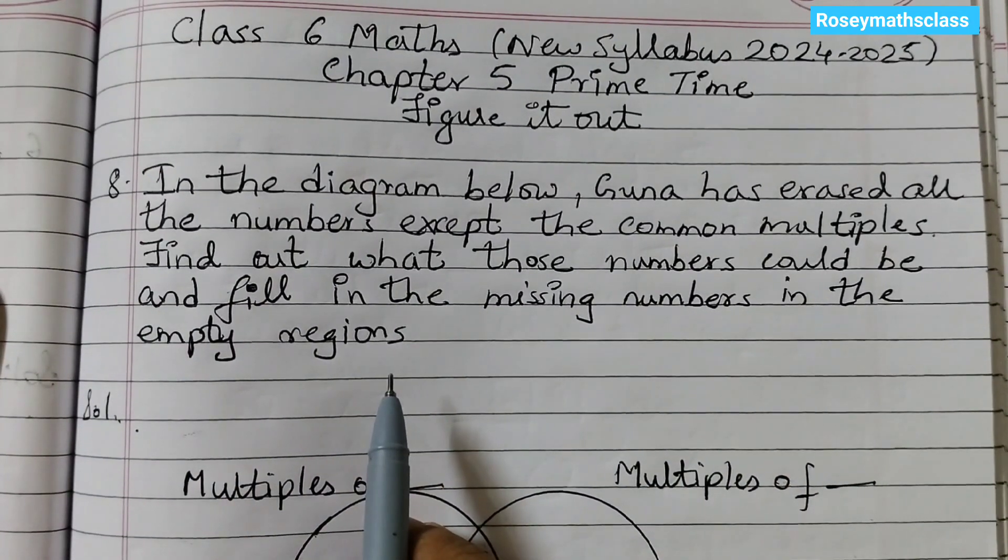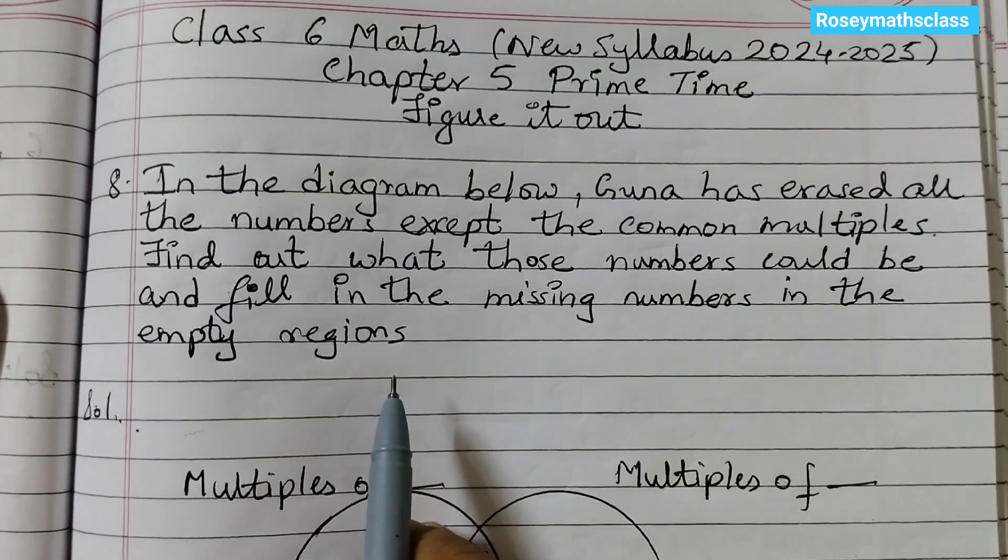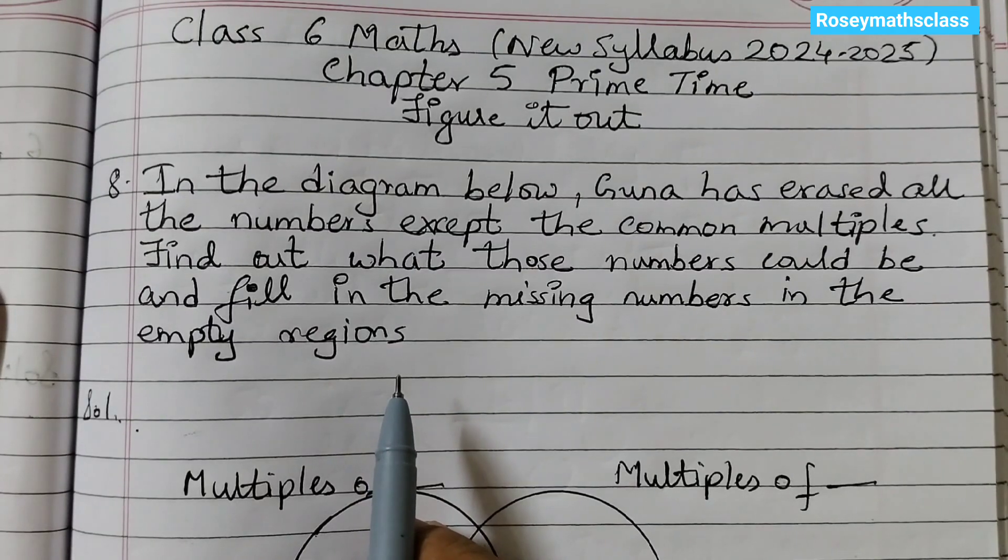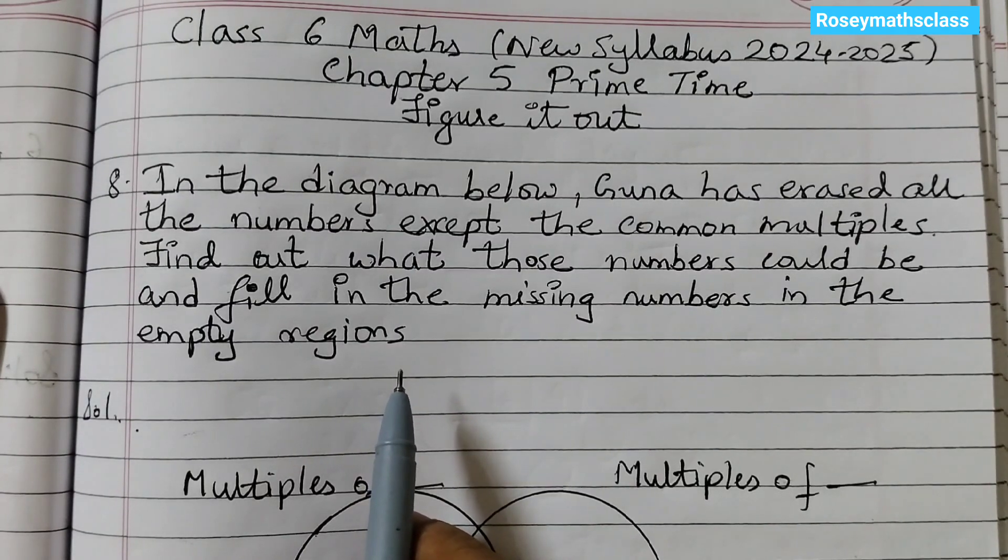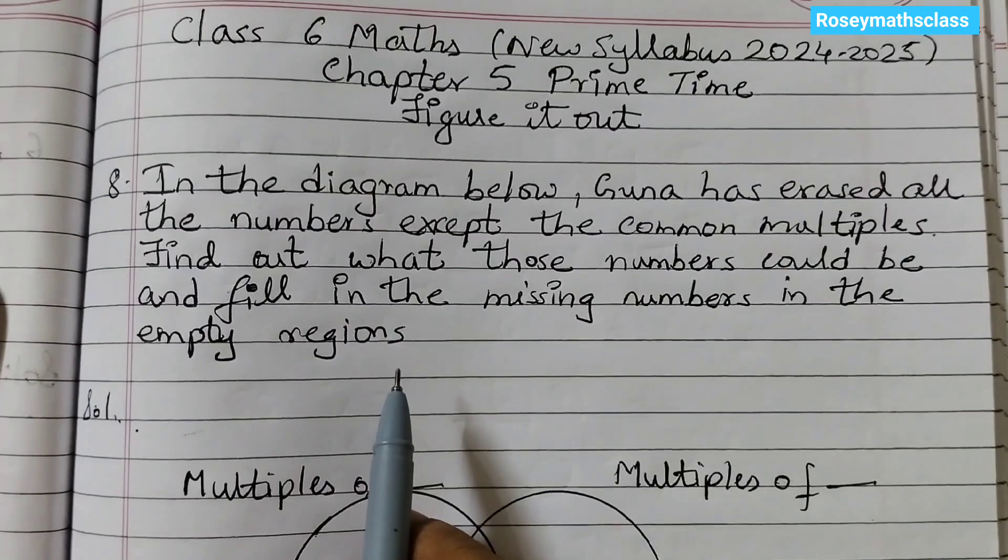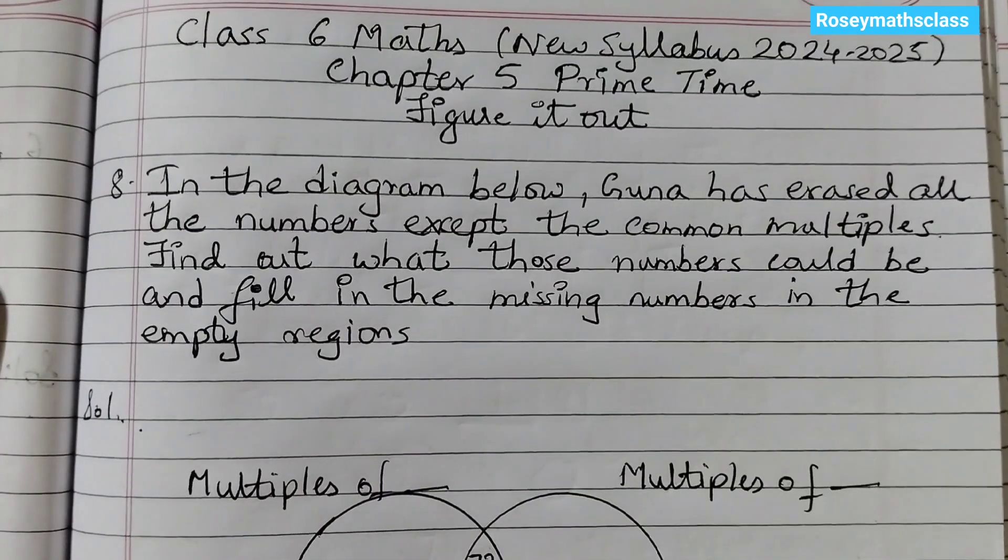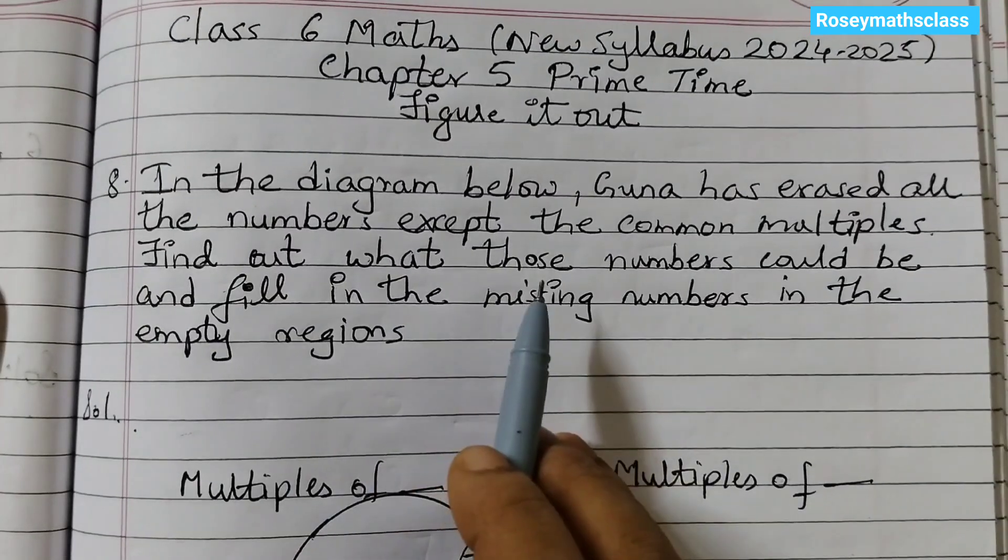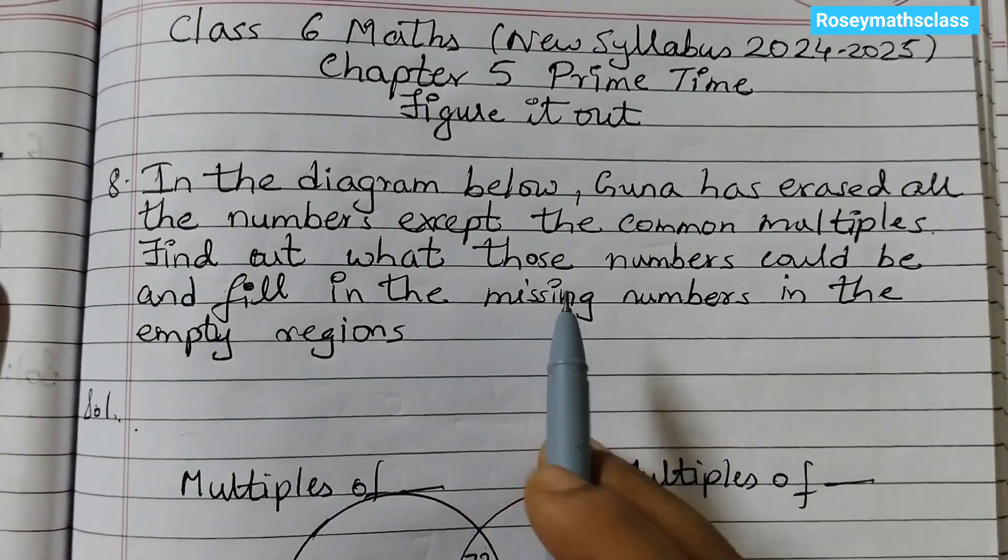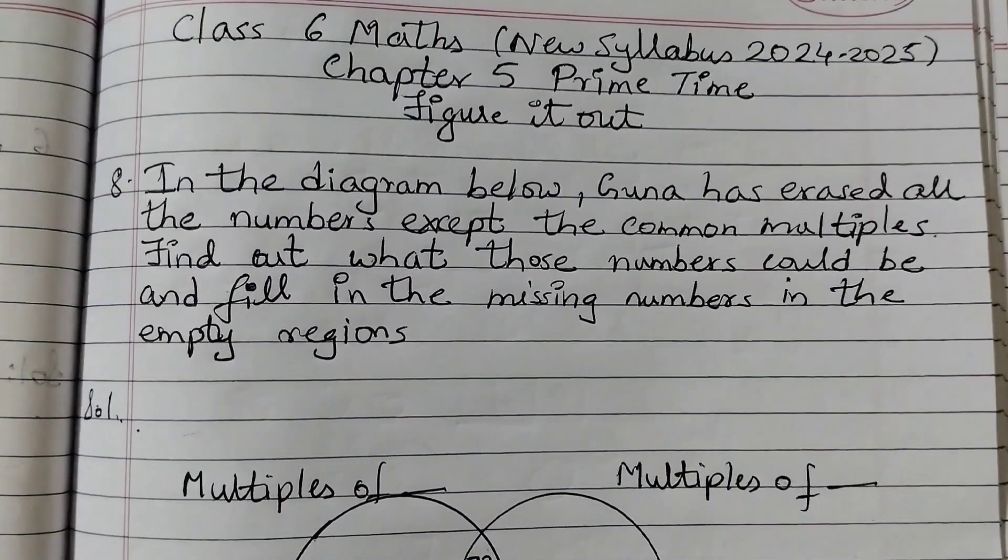To answer this question, you must know the game of Idli Vada that was given in the introduction video. If you have not seen that, first go and see that game and then you will be able to answer this question. Here the common multiples are given and rest all the numbers are erased.